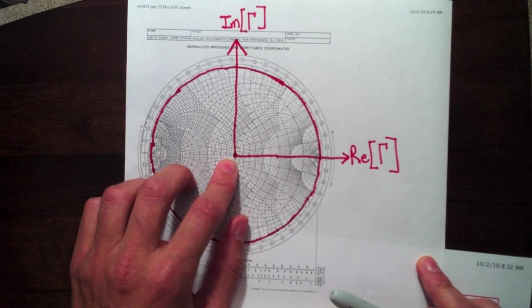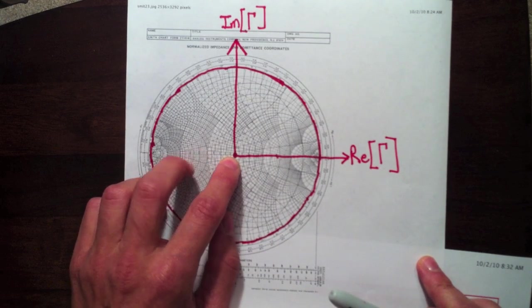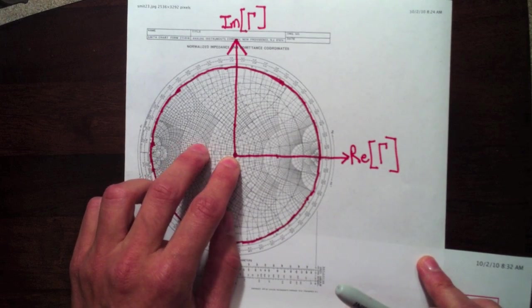So here is the center of the Smith chart, all power. So in this region, the magnitude of gamma is zero, in which case there's no power reflected and the antenna is perfectly matched to the transmission line. So all the power is delivered.